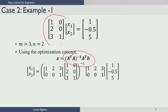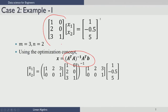The A matrix is [1 0; 2 0; 3 1], so A-transpose is [1 2 3; 0 0 1]. Simply plugging in the matrices and doing the calculation gives us an intermediate step, and when you further simplify it, you get a solution x1 equals 0, x2 equal to 5.